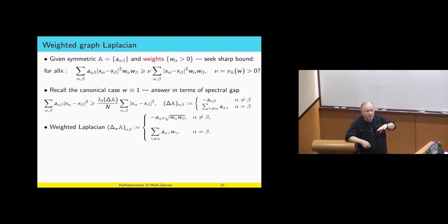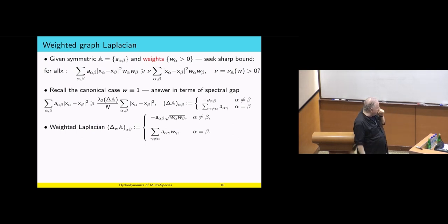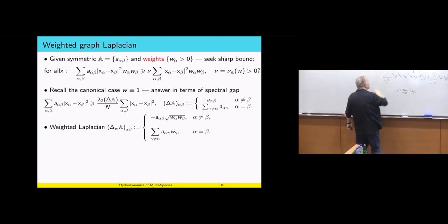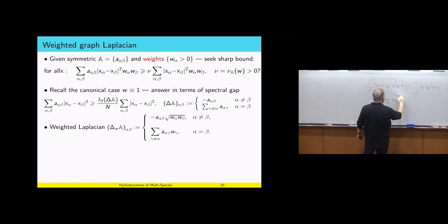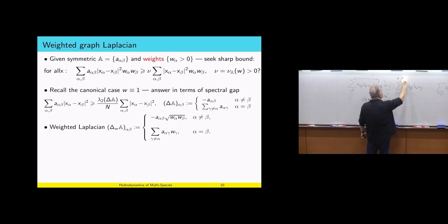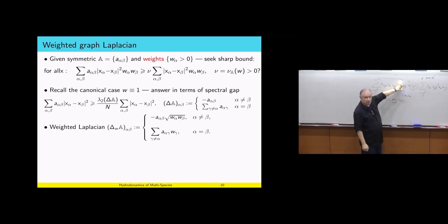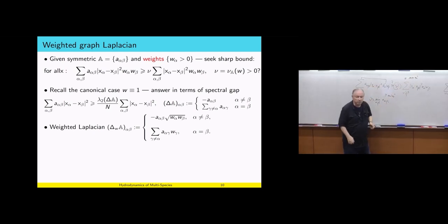I want to generalize this question with weights. If I take the left-hand side term and put a min of W alpha squared below and a max of W alpha squared above, I'm left without weights and recover the Fiedler number lambda 2. However, I must pay the price of the relative ratio between the max and the min of W alphas — the condition number. I don't want that. I want something independent of the condition number. To do that, I introduce the weighted Laplacian, which is defined with off-diagonal terms weighted by the weights and the weighted sum of off-diagonal terms along the diagonal.